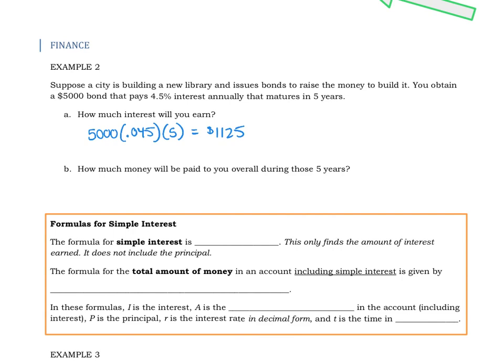So how much money will be paid to you overall during those five years? Well, it's going to be the interest plus they're going to repay the amount that they borrowed from you. So they're going to repay that principal. So it's going to be the $1,125 plus the $5,000 repaid in principal, and overall you're going to get $6,125.